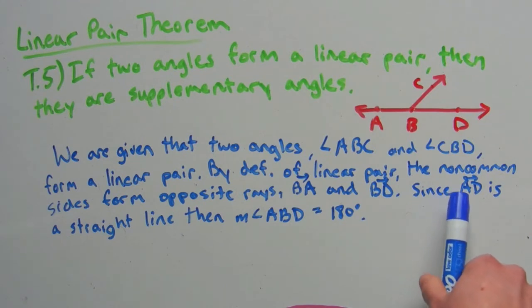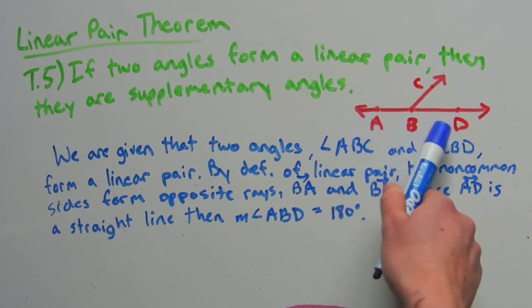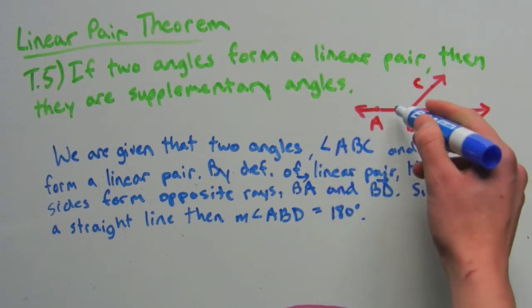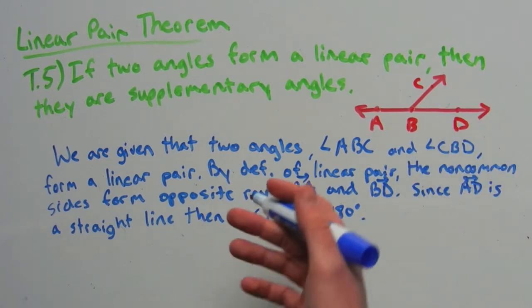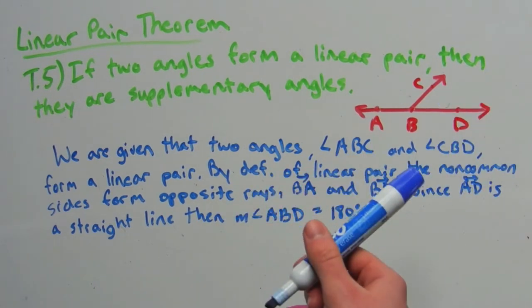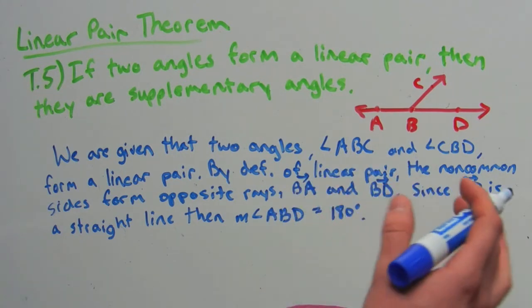And since line AD is a straight line, then we know that the measure of ABD, so ABD, that straight line measuring all the way around, is equal to 180 degrees. And we know this based off of the definition of a straight line and the measurements within the protractor postulate.